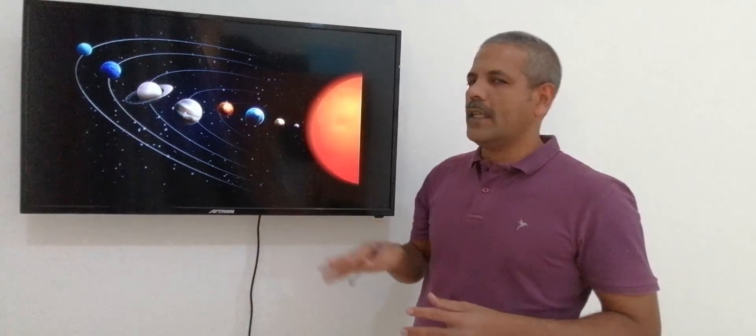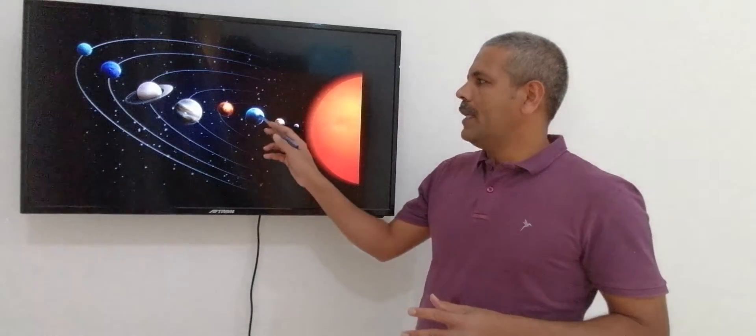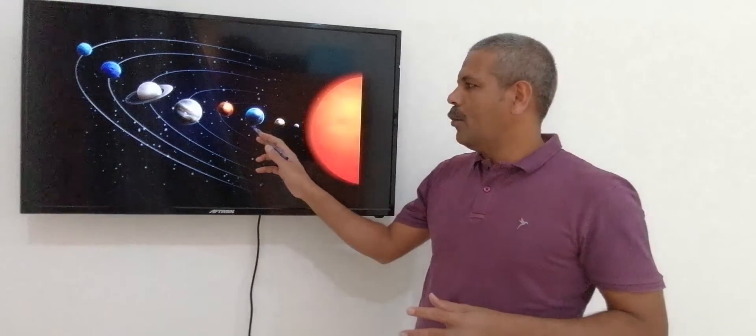This is the solar system. In the solar system, we have two planets in the orbit. The third planet is the moon. The moon is the moon.